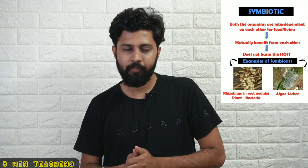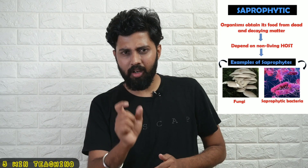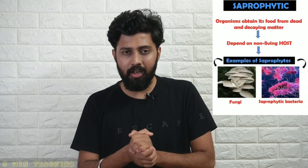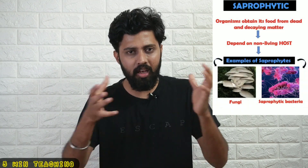An example of symbiotic nutrition is rhizobium. The third mode is saprophytic nutrition. Saprophytes are very important — they take nutrients from dead and decayed organisms.